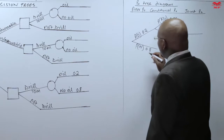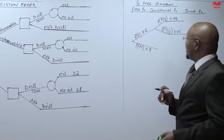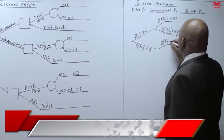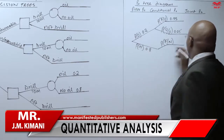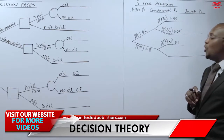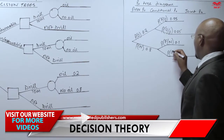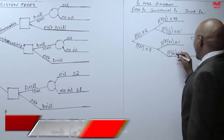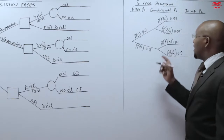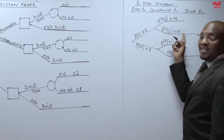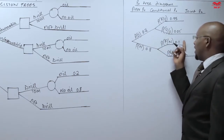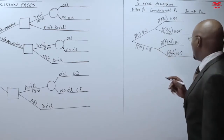We were also told that if there is no oil, there is a 10% chance of the report being favorable. So the probability of a favorable report given no oil is 0.1. Therefore, if there is no oil, the probability of an unfavorable report given no oil is 0.9. This is the correct position — if there is no oil we should get an unfavorable report. These represent errors: a 5% chance of a bad report when there is oil, and a 10% chance of a favorable report when there is no oil.